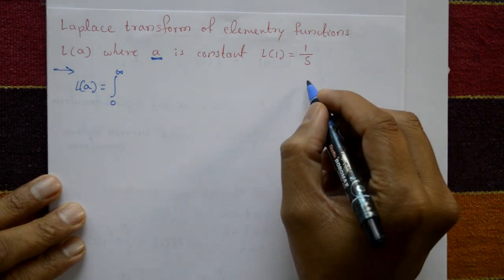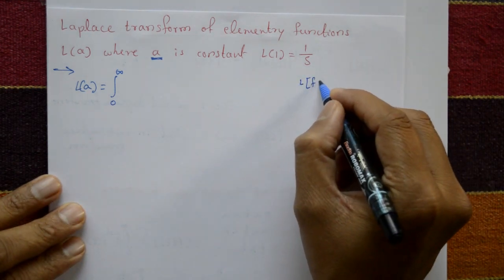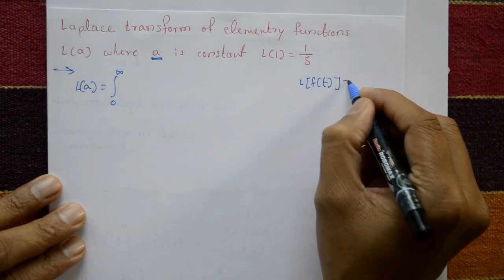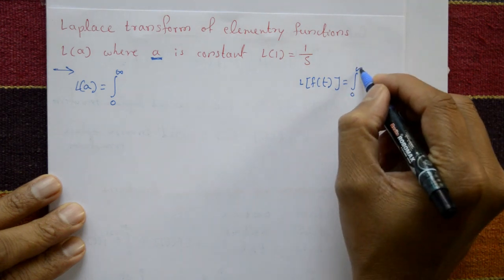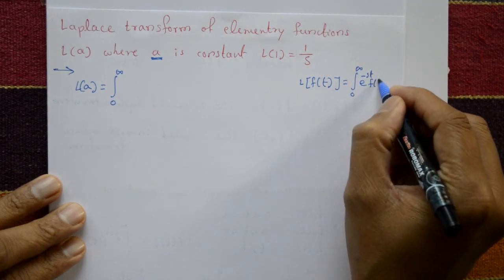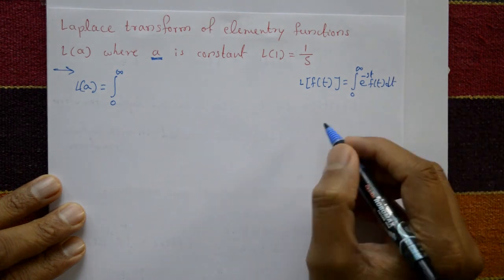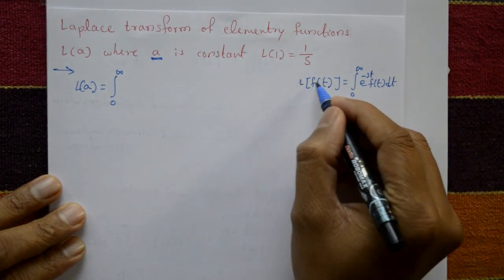You know the definition of Laplace transform: L{f(t)} is equal to integration of 0 to infinity, e raised to minus st, f(t) dt. For f(t) means L of f of t, so f(t) means a.